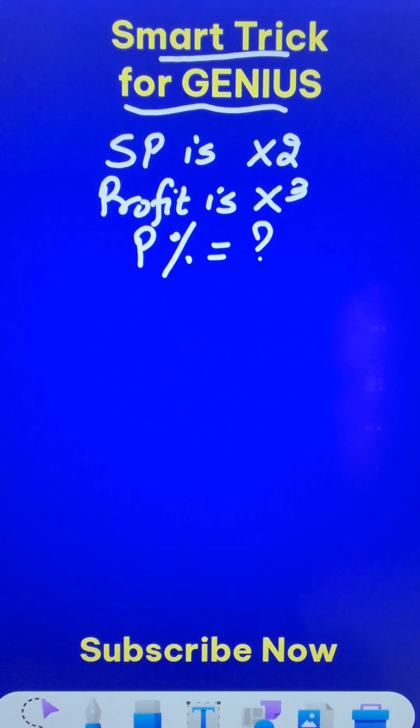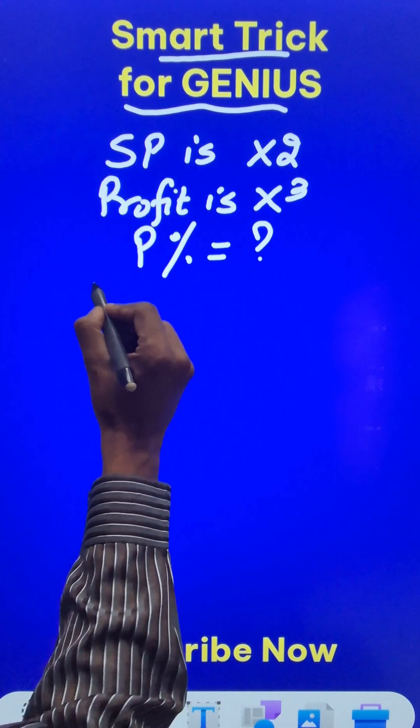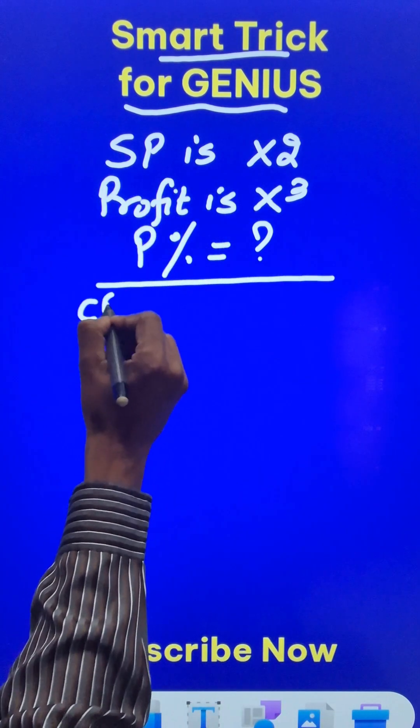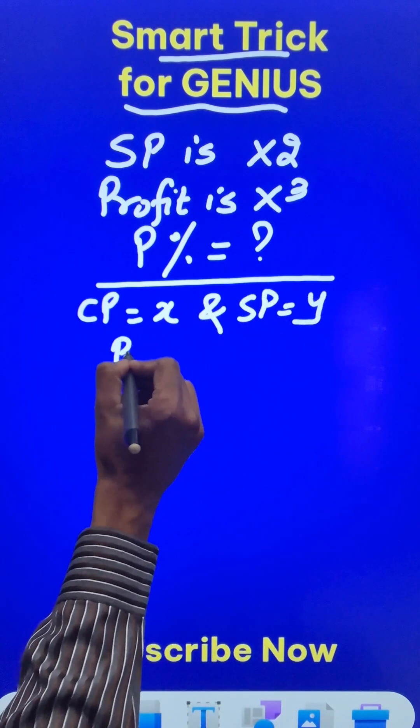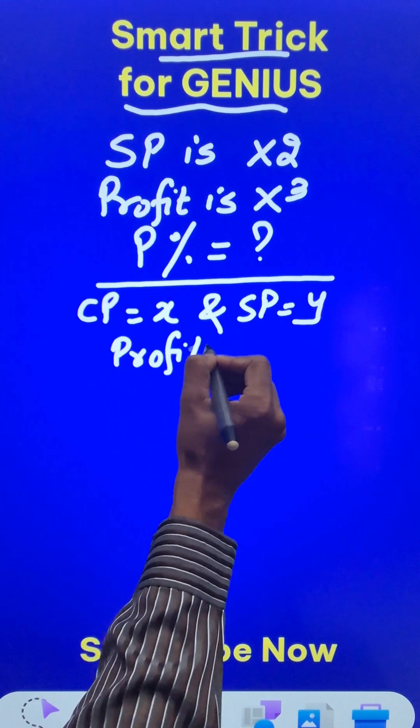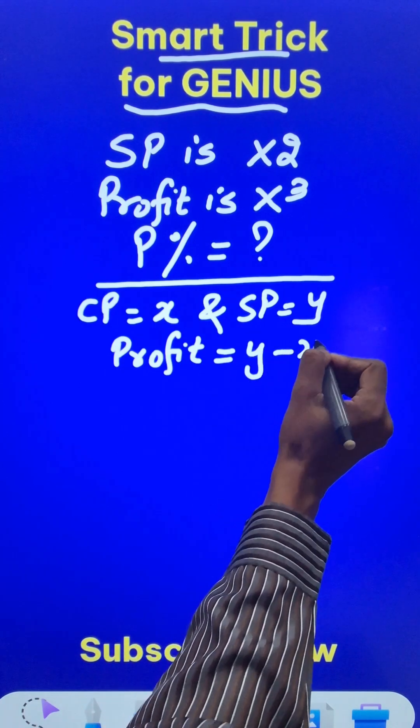Can you do it orally? Difficult, right? For this, we assume that the cost price is X and the selling price is Y. Therefore, the profit is selling price minus cost price, which is Y minus X.